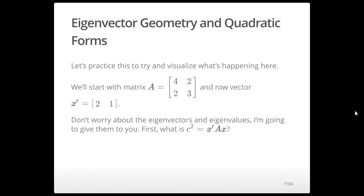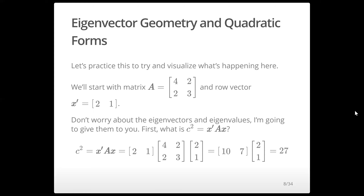Let's practice and visualize what's happening geometrically. We start with a symmetric matrix — the off-diagonal elements are the same on either side — and a row vector (2, 1). Let's get the c² term first. c² equals x transpose times A times x, that's (2, 1) times our matrix times (2, 1) transposed. That gives us 27. The quadratic output is always a scalar — in this case, 27.